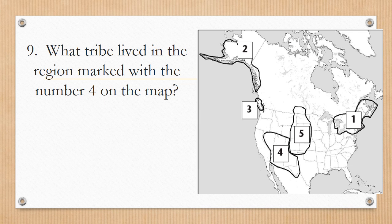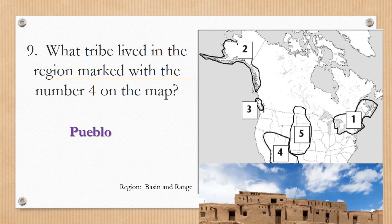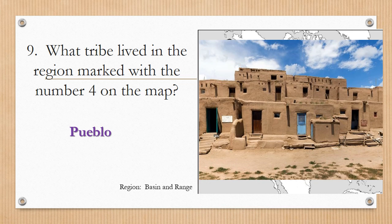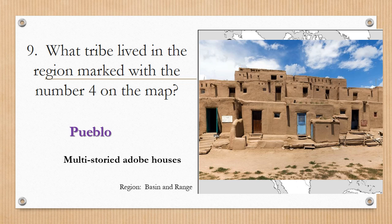Number nine: What tribe lived in the region marked with the number four on the map? This region would be the Basin and Range region. The answer is the Pueblo. Remember that this term has multiple meanings — in question nine, Pueblo refers to a certain tribe or people group, but Pueblo can also refer to multi-storied adobe houses made out of clay.